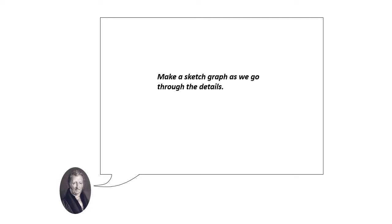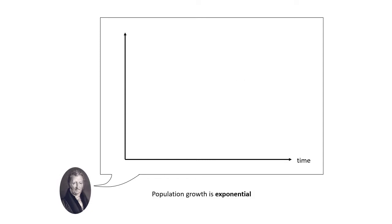So let's start off with Malthus. I think it might be a good idea to make a sketch graph and fill in the details as we go along. Malthus said population grows exponentially. People have too many babies who go on to have too many babies themselves, and those babies go on to have even more babies. So population growth is accelerating over time.